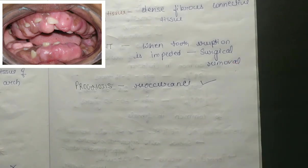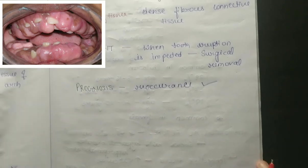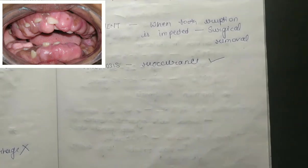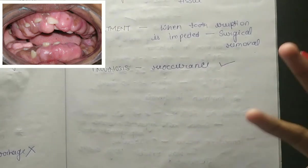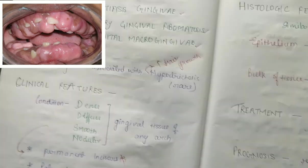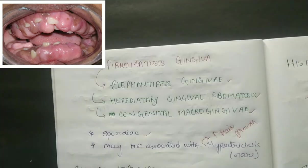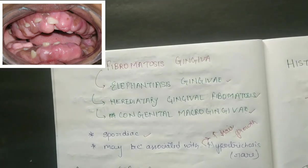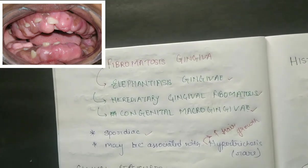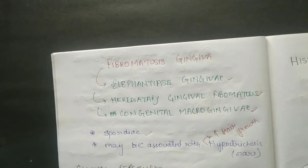Regarding prognosis, recurrence can be seen, meaning it can develop again. That is all about fibromatosis gingiva. In the next video we will study retrocuspid papula. Thank you so much for watching the video, and if you like this video, don't forget to subscribe to the channel.